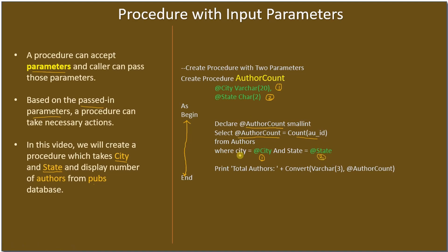And state equals the input parameter @state, which is one more input parameter. The city here is the column name. We are selecting from the authors table and making an aggregate — a COUNT of author_id — with the WHERE condition: city equals the input parameter and state equals the other input parameter. Whatever you pass will be substituted to form the WHERE condition, and based on that the number of authors is retained and assigned to author_count.